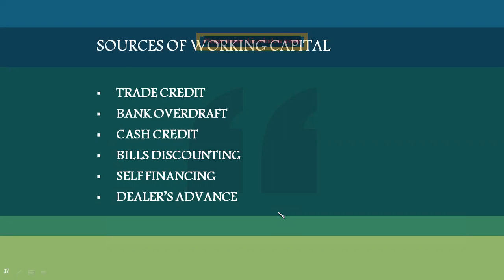Bill discounting means debtors' bills can be discounted with banks — this is one of the easiest methods of obtaining finance. Self-financing means using internal accumulated funds for day-to-day activities. Dealers advance means receiving amounts from dealers or suppliers in advance, with the product to be delivered later. These are the commonly available sources of working capital.